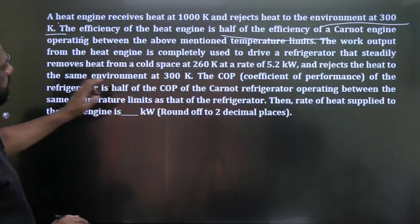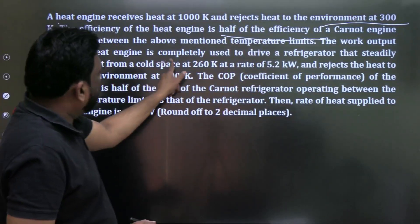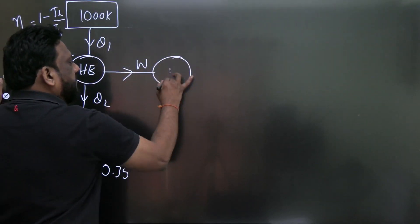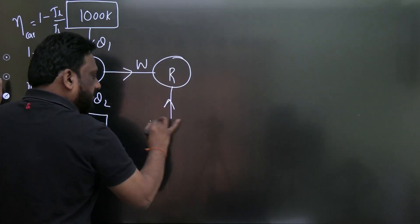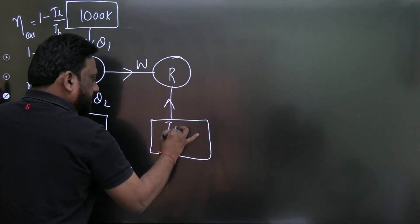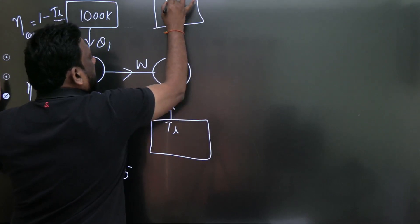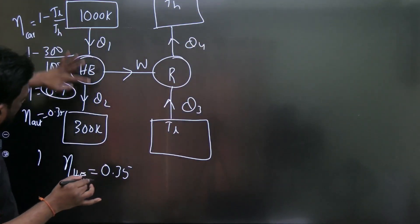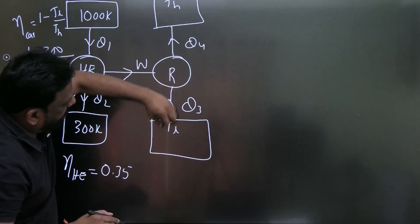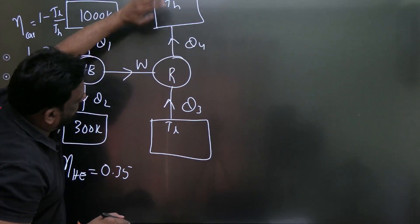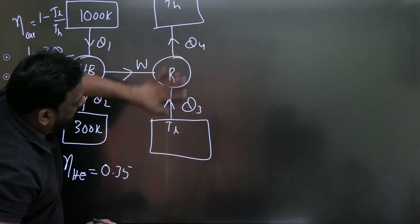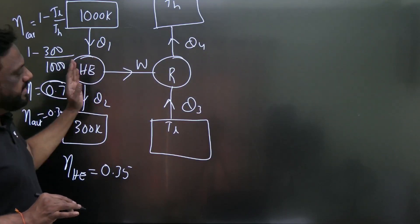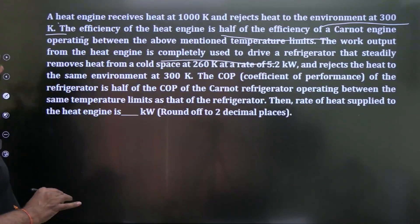The work output of the heat engine is completely used to drive a refrigerator. The refrigerator absorbs heat Q3 from a cold space at 260 K and rejects heat Q4 to surroundings at 300 K. It absorbs heat from cold storage at the rate of 5.2 kW.